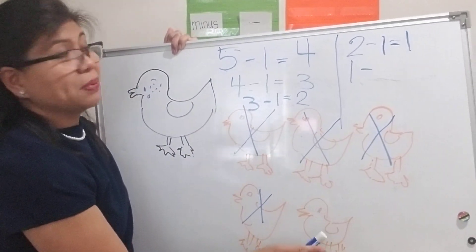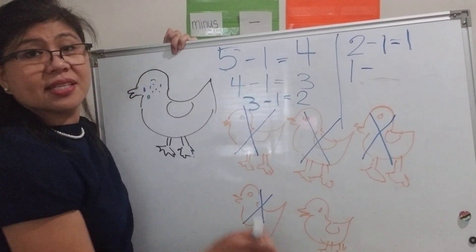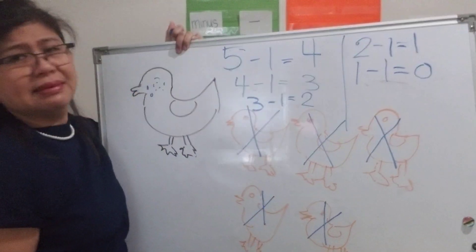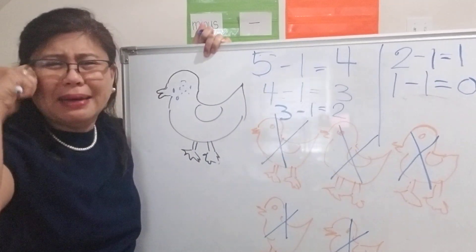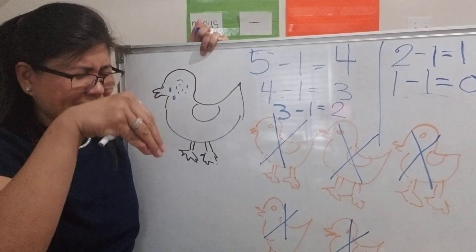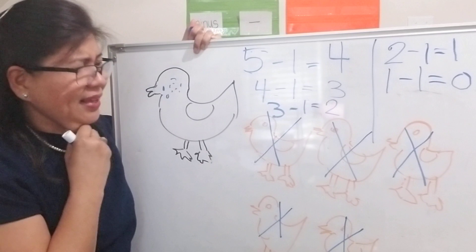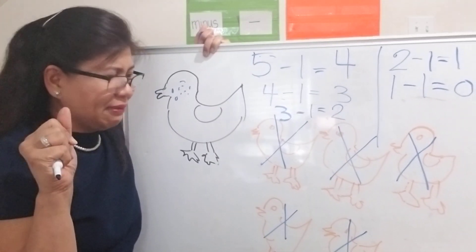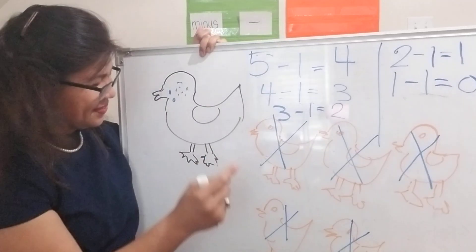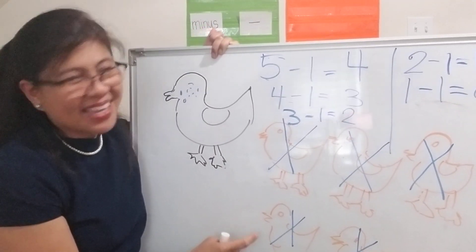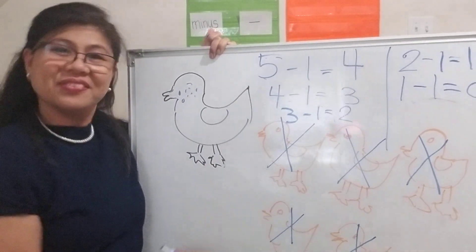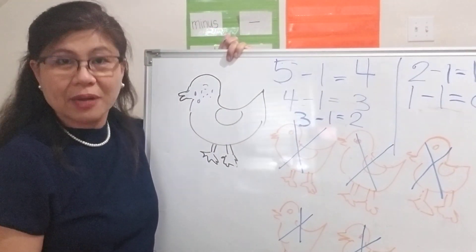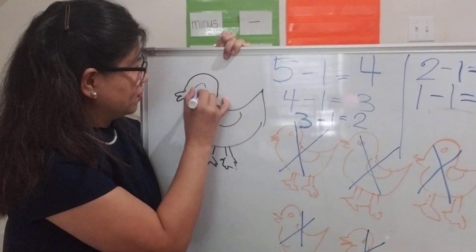One little duck came out to play over the hills and far away. Mother duck said quack, quack, quack, quack — but none of the little ducks came back. Sad mother duck came out to play over the hills and far away. Mama duck said quack, quack, quack, quack — and all of the five little ducks came back! They just went somewhere, but they came back, and that made mama duck really, really happy.